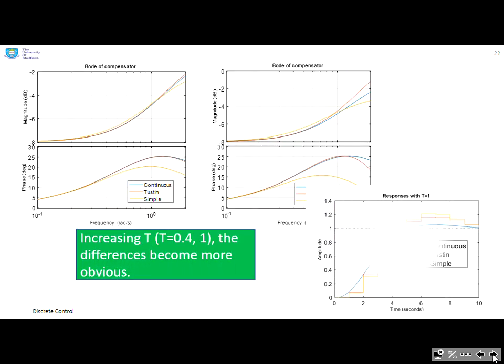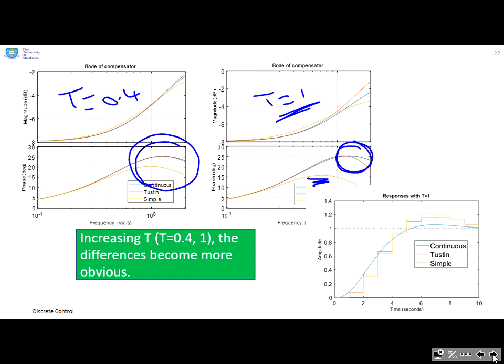And here we look at what happens if you increase the sampling time. So here we've gone to T=0.4 and here we've gone to T=1. So at 0.4, again looking at the phase diagrams, you can see with Tustin there's minimal error. It's still working quite well, whereas with the simple method the errors got quite large. Now as you go to T=1, which is perhaps getting a bit extreme, you'll see some errors begin to creep in between the Tustin and the continuous, and the simple down here is simply not good enough.